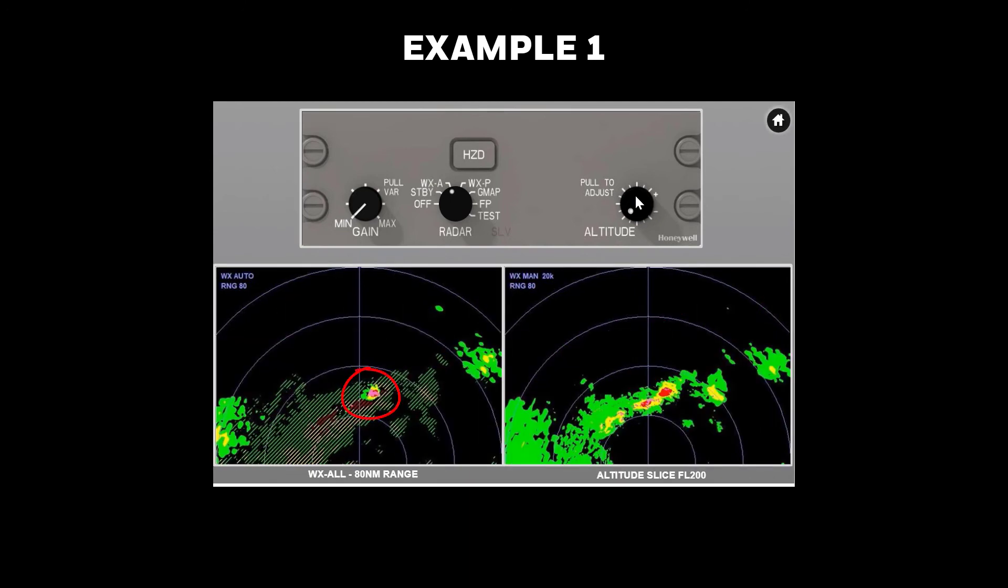When the cell is at a range where turbulence can be measured, additional evidence comes into view, the magenta color, indicating the cell on the right is the most important one to be avoided.